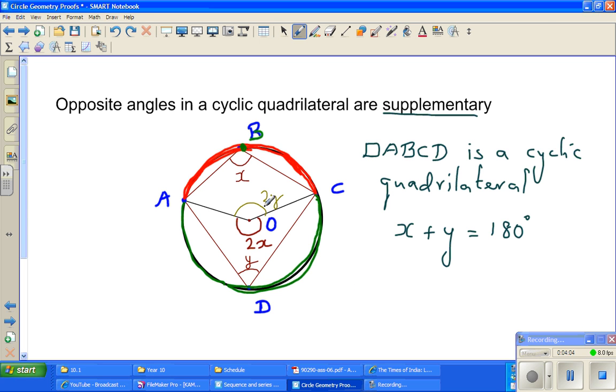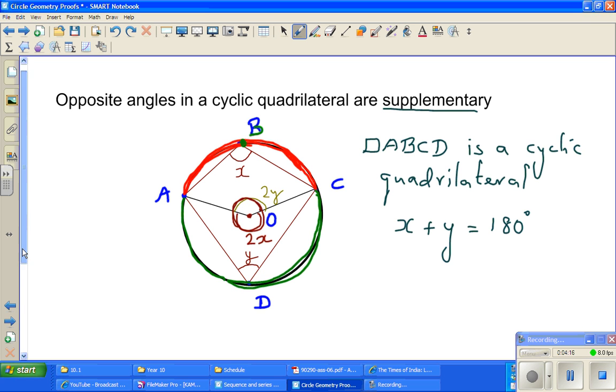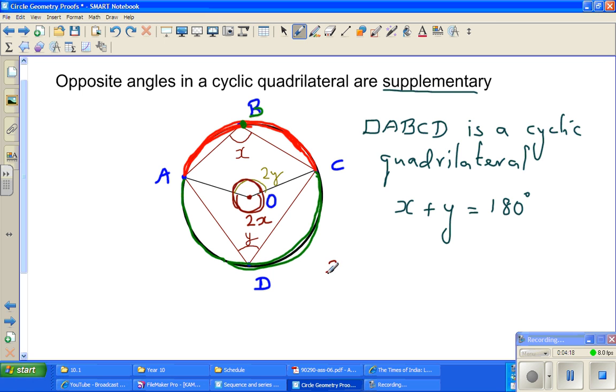Now, what do you know about 2X? If you consider this whole circle, angles at a point add to 360 degrees. So, can I say 2X plus 2Y equals 360? You can factor out the 2, so X plus Y equals 2 times 180.